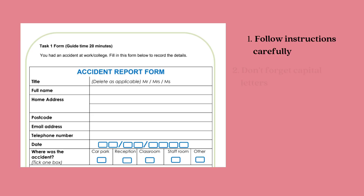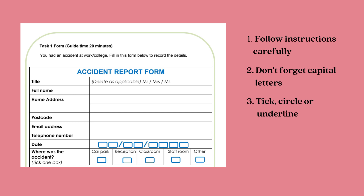In the form, don't forget to use capital letters when you fill it out with your names and your details — all proper nouns: your first name, your last name or surname, your address, name of the street, area, town, city, and also the postcode. Also remember to tick, circle or underline as instructed. Read the instructions carefully and follow them — be clear as to which one you have to use.